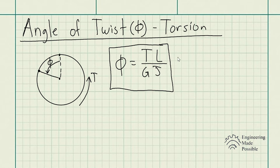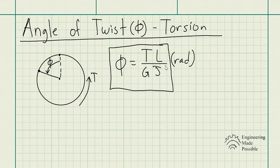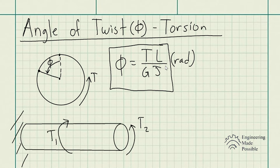Keep in mind, the units of the angle of twist are in radians. Now what happens when you have a situation where you have a shaft fixed at one end and multiple torques being applied at different locations?